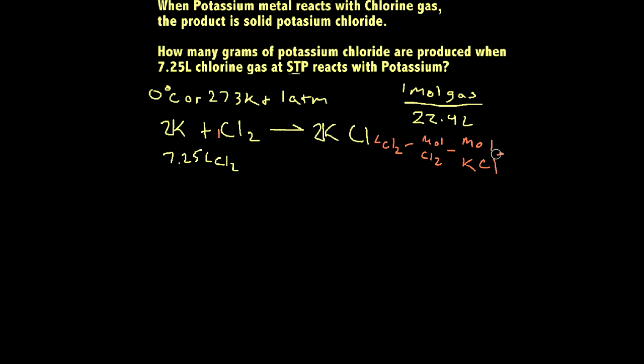So once I have moles, I can then go from moles of potassium chloride down to grams of potassium chloride. Alright, so that's how I'm going to go about solving this problem. And let me go ahead and do it in a different color. And let me get rid of this over here in the yellow, and I'll do it all in a different color. Okay, so we're going to start with our given, which is 7.25 liters of chlorine gas.